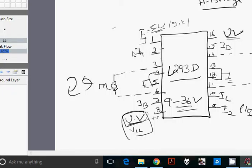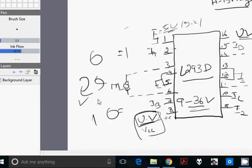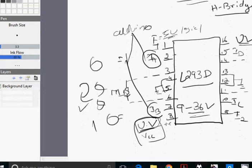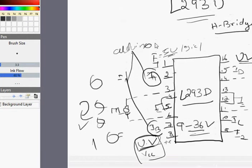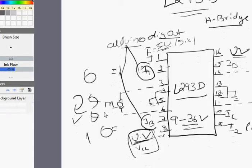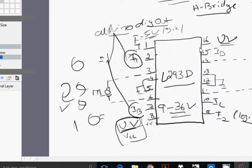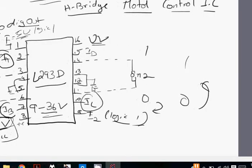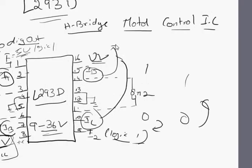To spin motor 1 clockwise: IA equals one and IB equals zero. To spin it counterclockwise: IB equals one and IA equals zero. IA and IB are connected to the digital output pins of your Arduino. So one-zero means clockwise, zero-one means counterclockwise. The same logic applies to motor 2 via IC and ID. These four inputs are your Arduino digital outputs.